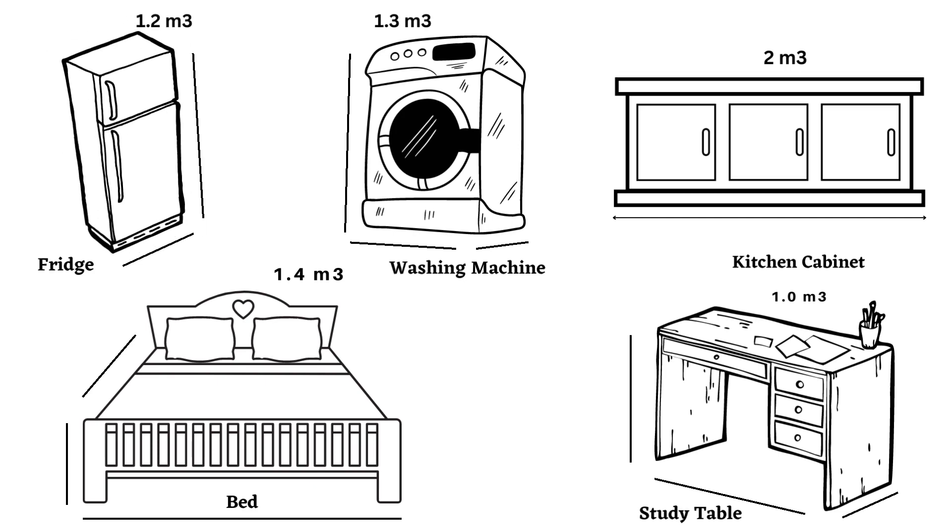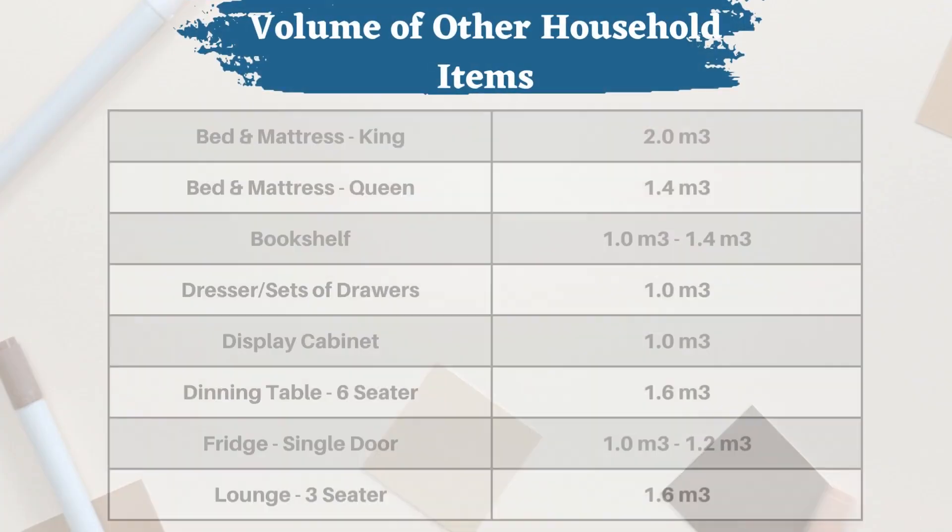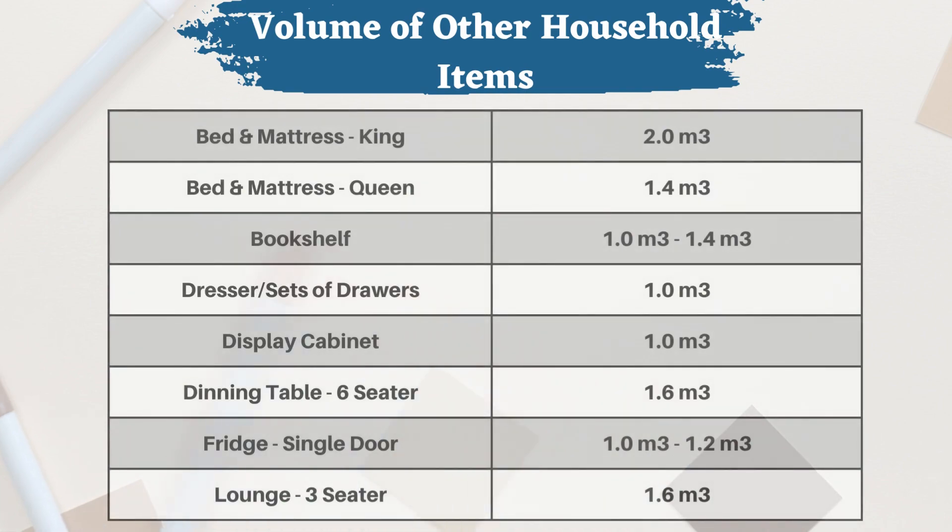In this section we mention basic household items like fridge, washing machine, kitchen cabinet, bed, and study table. Brief information about the volume of other household items.